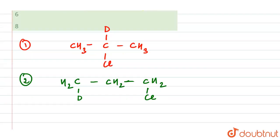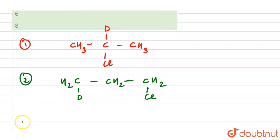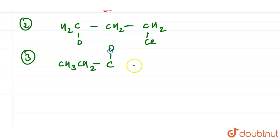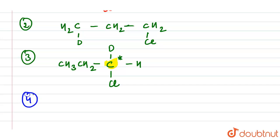For the third structure, we have one carbon with CH₃ and CH₂ groups attached, along with D, H, and Cl on the central carbon. This central carbon has four different groups, making it a chiral carbon.